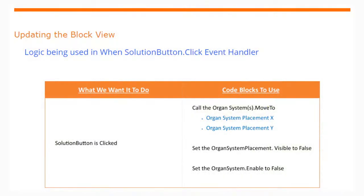Now for our block view. The logic for our solution button when clicked is that when that button is clicked we want to call those organ systems to move to wherever their placements are on the screen. For example, your brain would move to the brain x and y placement. You'll also want to set the organ system placements visible to false and set the organ systems enabled to false as well.